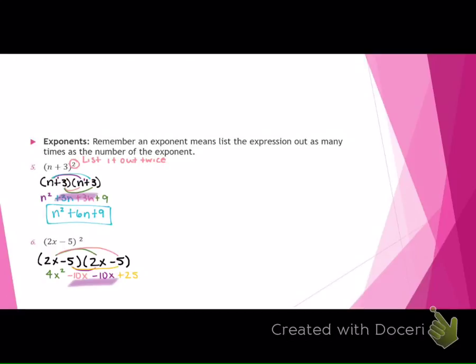Negative 5 times the same. Be careful. Negative times negative is a positive. Negative 5 times 2x is negative 10x, and negative 5 times negative 5 is positive 25. So what do you get as your final answer? 4x squared minus 20x plus 25.